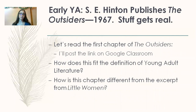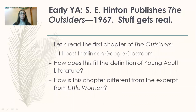Then S.E. Hinton publishes The Outsiders in 1967 and it becomes something very realistic and even a little gritty at times. For my students, I'm going to ask you to read the first chapter — I'll post the link on Google Classroom. Then I'll ask: how does this fit the definition of young adult literature, and how is this chapter different from the excerpt from Little Women?